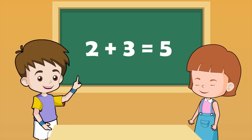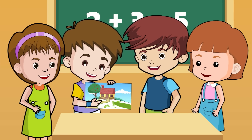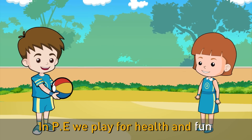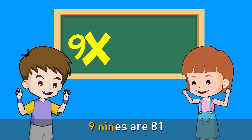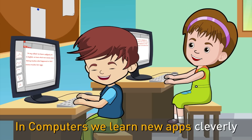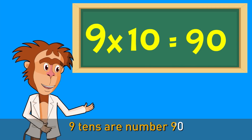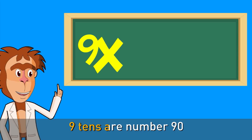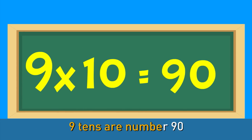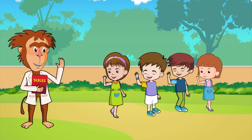We've learnt the 9 times table up to 8. Now it's time for 9 and 10 — let's go! In PE we play for health and fun. 9 nines are 81. In computers we learn new apps cleverly. 9 tens are 90. Well done! We now know the 9 times table!